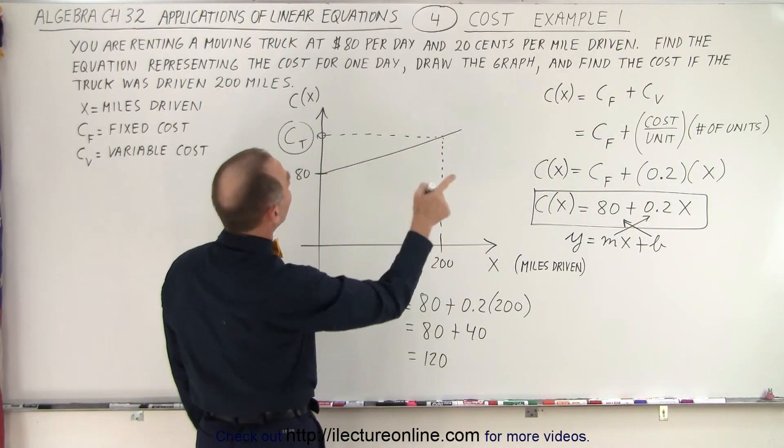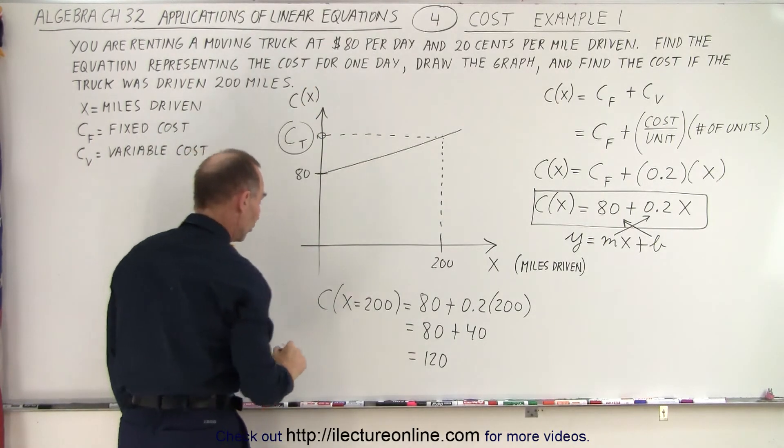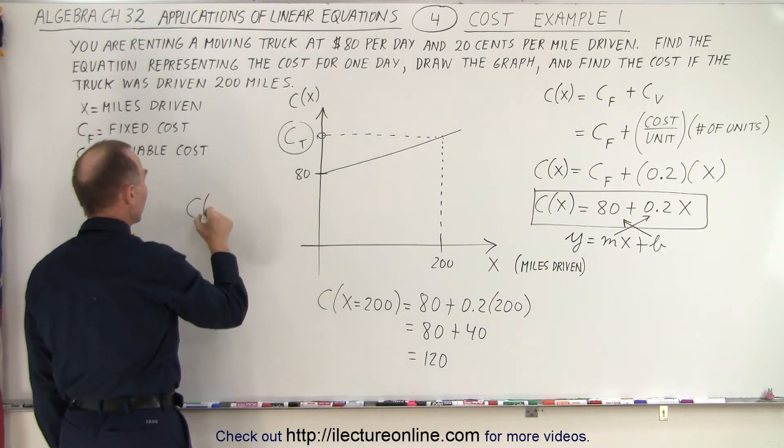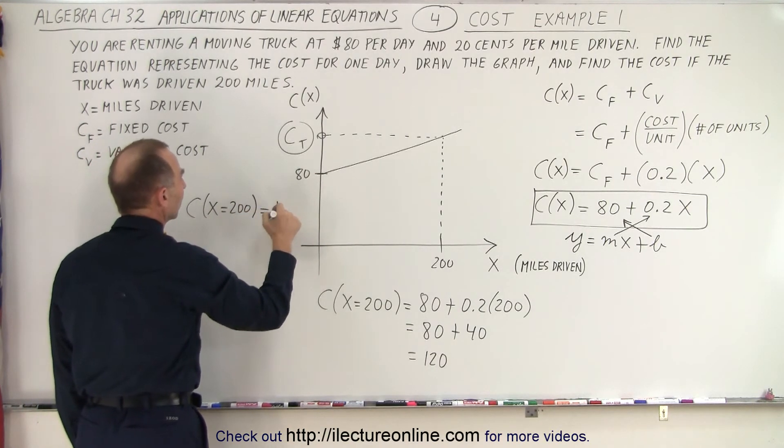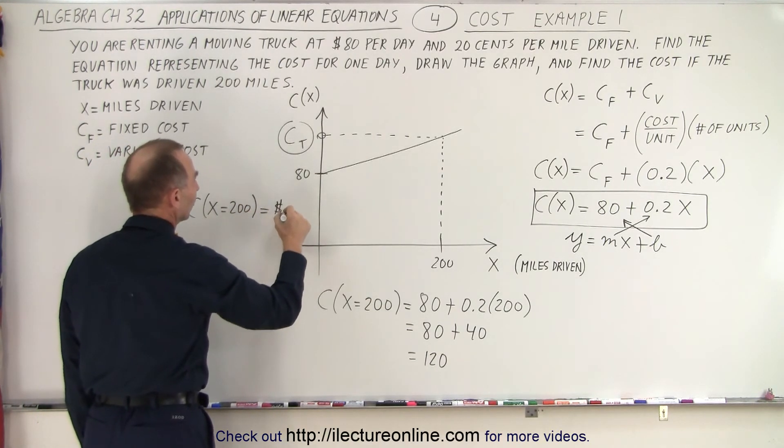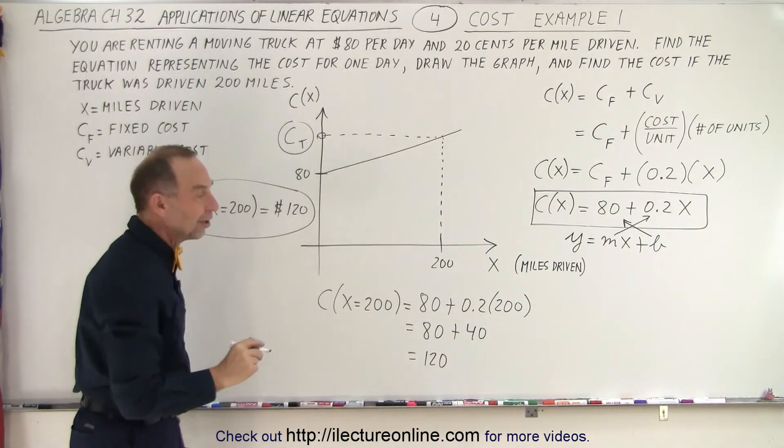And of course, we're talking about dollars because x is the number of miles driven, but the variable cost of 20 cents per mile, and that was $80. So we could say that C, when x equals 200 miles, is equal to $120.